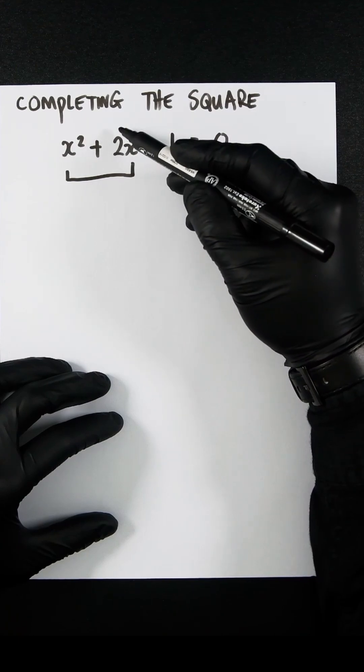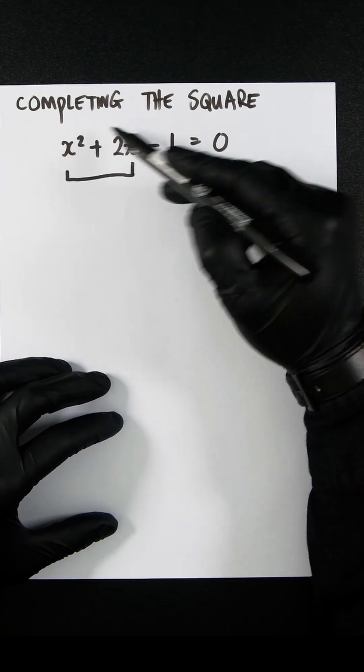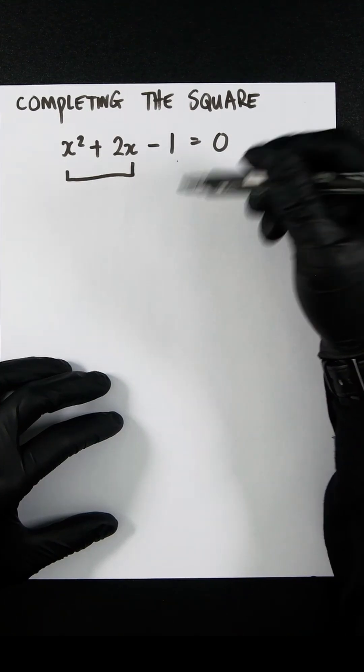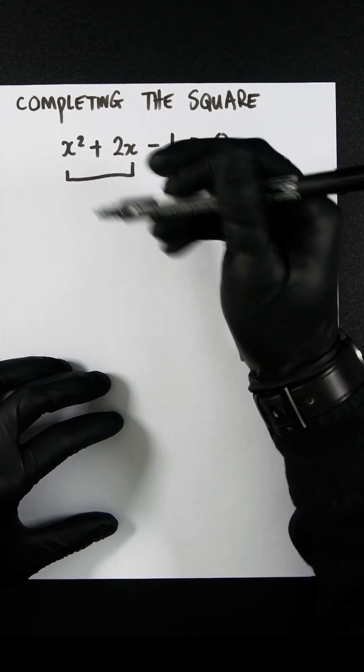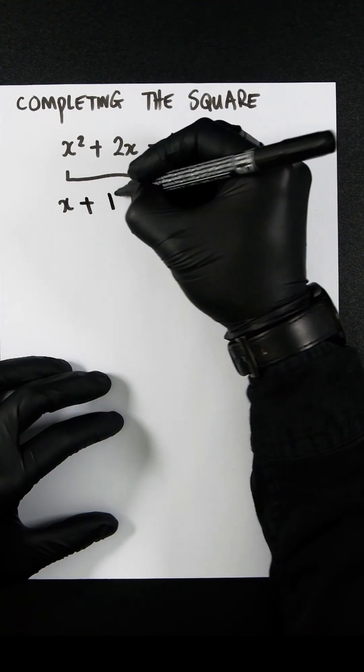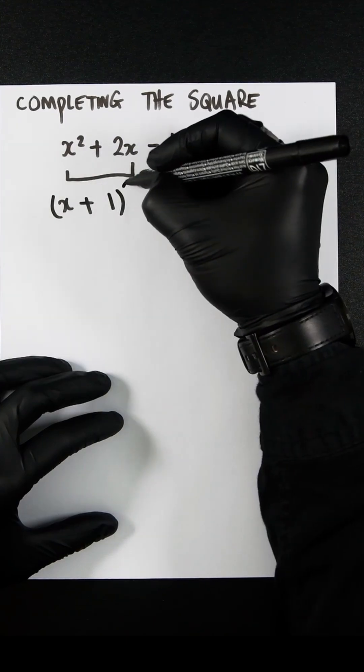Everything that is in the b position—so in ax² + bx + c, this b position—you half it. So it'll be one, and then you put x beneath. So let's do x plus, half of this is one, and let's square it.